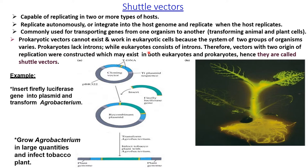Eukaryotes consist of introns. Therefore, vectors with two origins of replication were constructed which may exist in both prokaryotes as well as eukaryotes — hence they are called shuttle vectors. One example is the glowing tobacco.